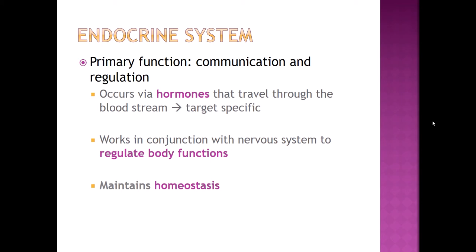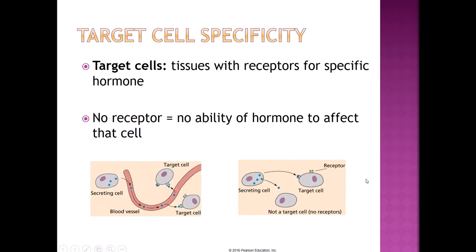Your body really wouldn't function very well without an endocrine system. When your endocrine system malfunctions, there can be some really weird, crazy, and strange things that happen. The endocrine system is very target specific, and if it didn't have this target cell specificity, it really wouldn't be able to function at all. Target cells are the tissues and organs that have receptors for a specific hormone. If a particular organ or cell doesn't have a receptor for a particular hormone, that hormone will not be able to affect that cell.